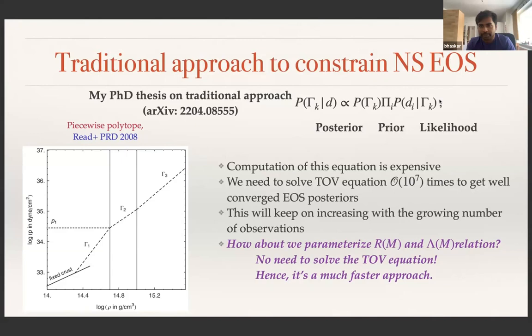We can vary these parameters to produce a large range of equations of state, and our target is to constrain these parameters from observations using Bayesian statistics. The computation is expensive: for each equation of state parameter set, we must solve TOV equations and calculate tidal deformability, then compare with observables. This process must be repeated for roughly 10^7 iterations to get well-converged posteriors, and will keep increasing as we have more observations.